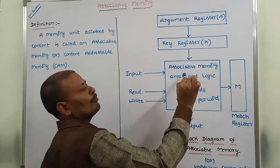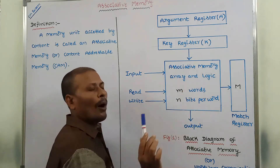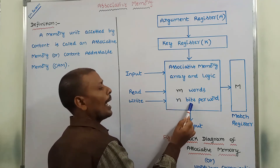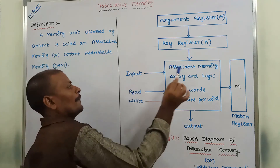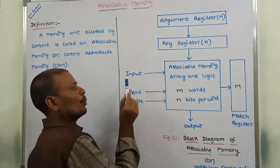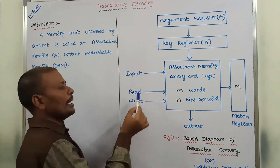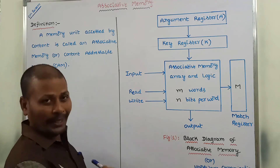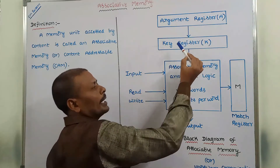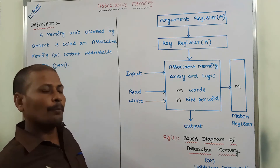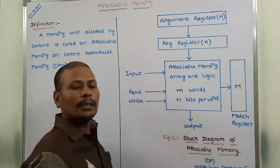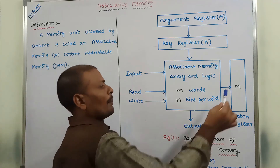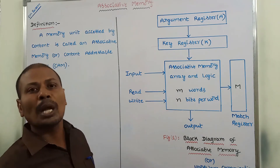The key register is used for comparison purposes. This is the associative memory array and logic — it is two-dimensional in form, consisting of m number of words, and each word contains n number of bits. We apply input here and perform the read and write operations. The argument register and key register each contain m number of bits. Next is the match register, which contains either 0 or 1, and its capacity is m number of bits.